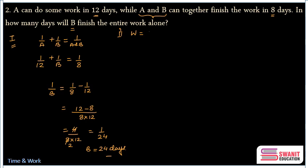Let me assume some total work. So, I assume total work as 48 units. Which means, if A can do this work in 12 days, A's 1 day work becomes 48 by 12, that is 4 units. Similarly, if A and B together can do it in 8 days, their 1 day work, that is A and B's 1 day work is 48 divided by 8, that is 6 units.